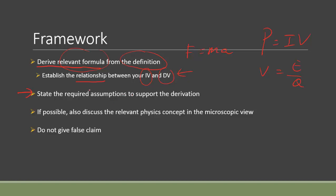Another very important and often overlooked point: you must state the required assumptions that support the derived work shown above. For example, if you're using kinematics equations from IB, you still need to clearly describe and state those assumptions. This is also useful later — you may find those assumptions were not met in your experiment, which could explain why your result differs from the theoretical one.